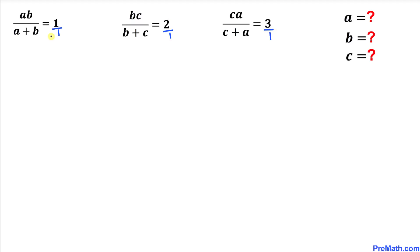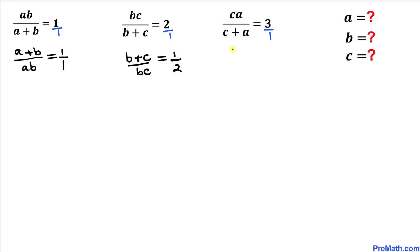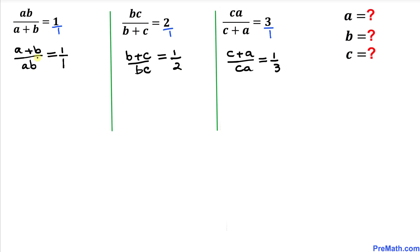In this next step, let's go ahead and flip all these rational equations — in other words, write them in reciprocal form. So the first equation becomes A plus B divided by AB equals 1 divided by 1. Likewise, we flip the second and third equations. Then we write each fraction as individual fractions: A divided by AB plus B divided by AB equals 1 over 1, which is 1.